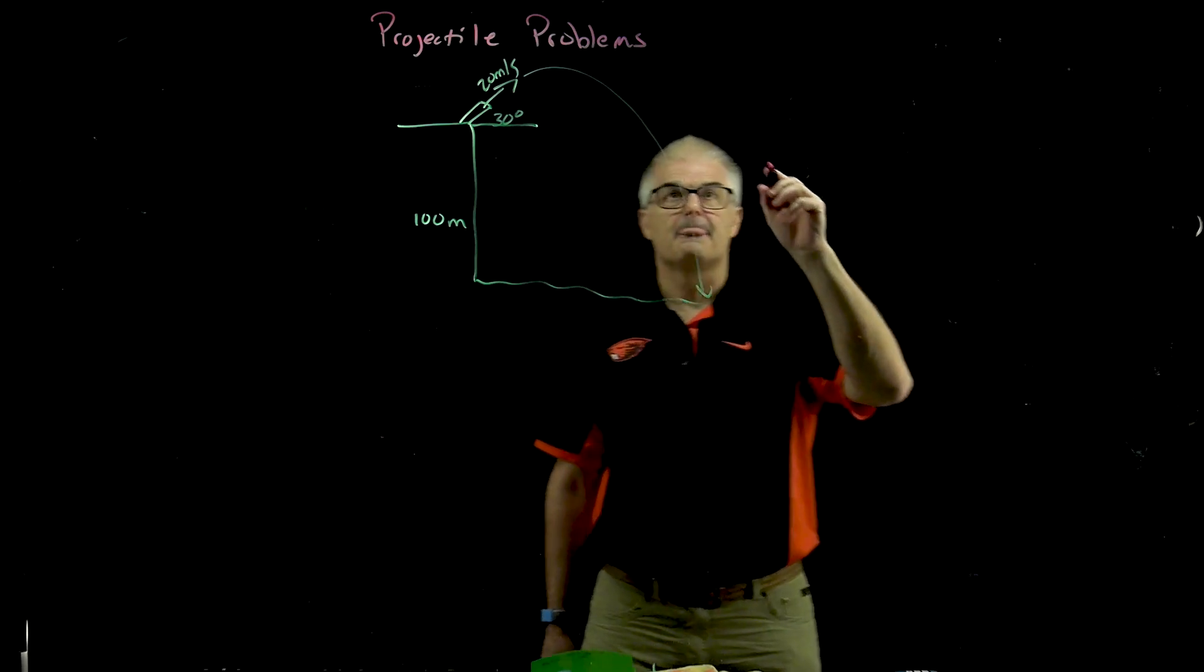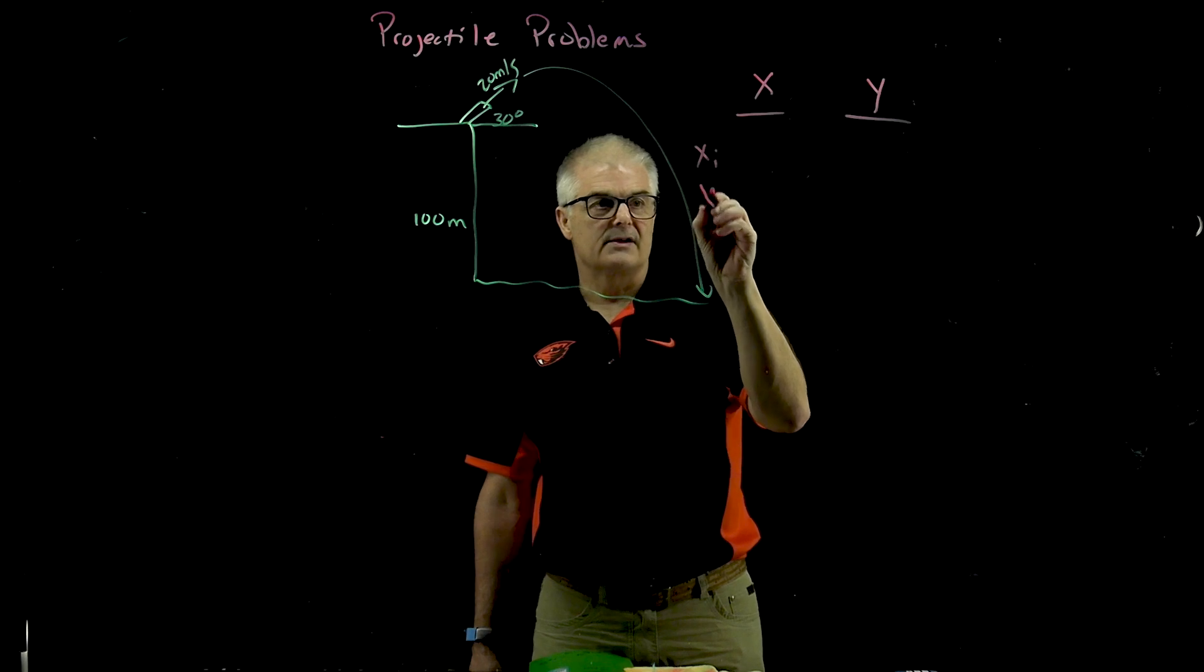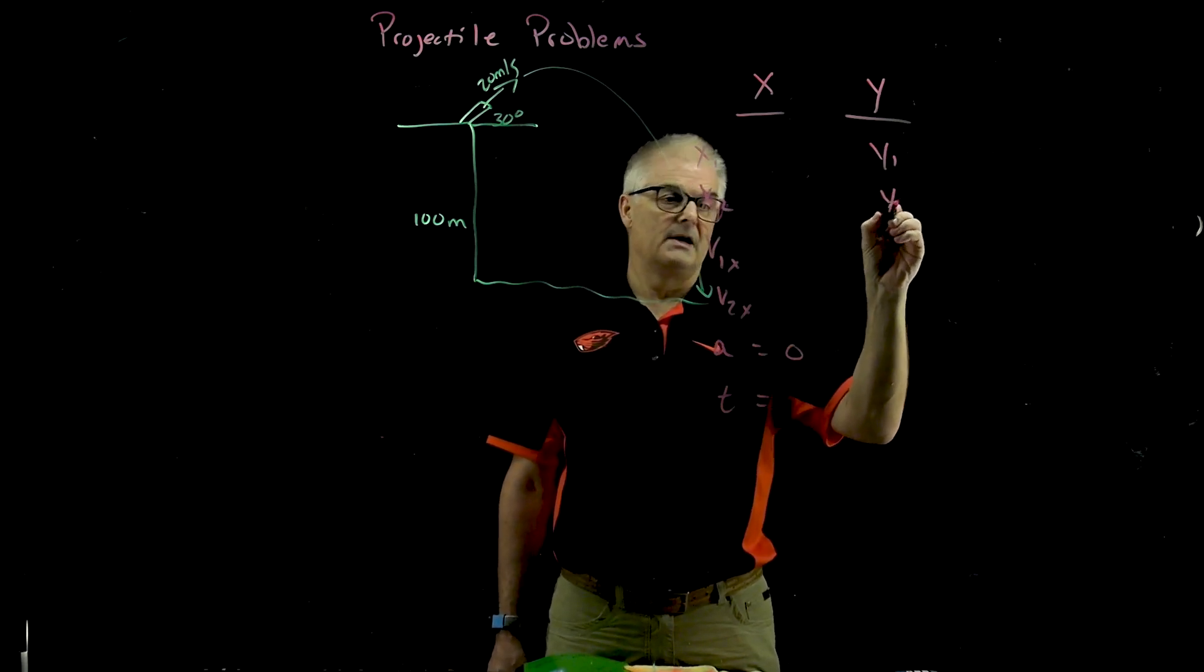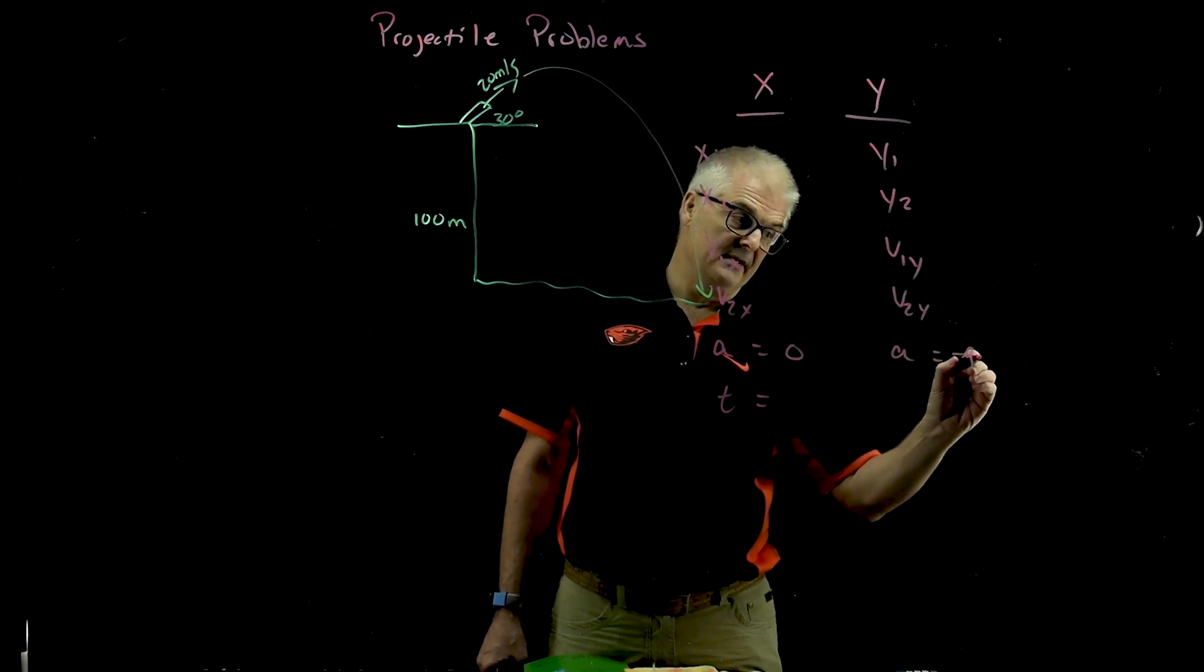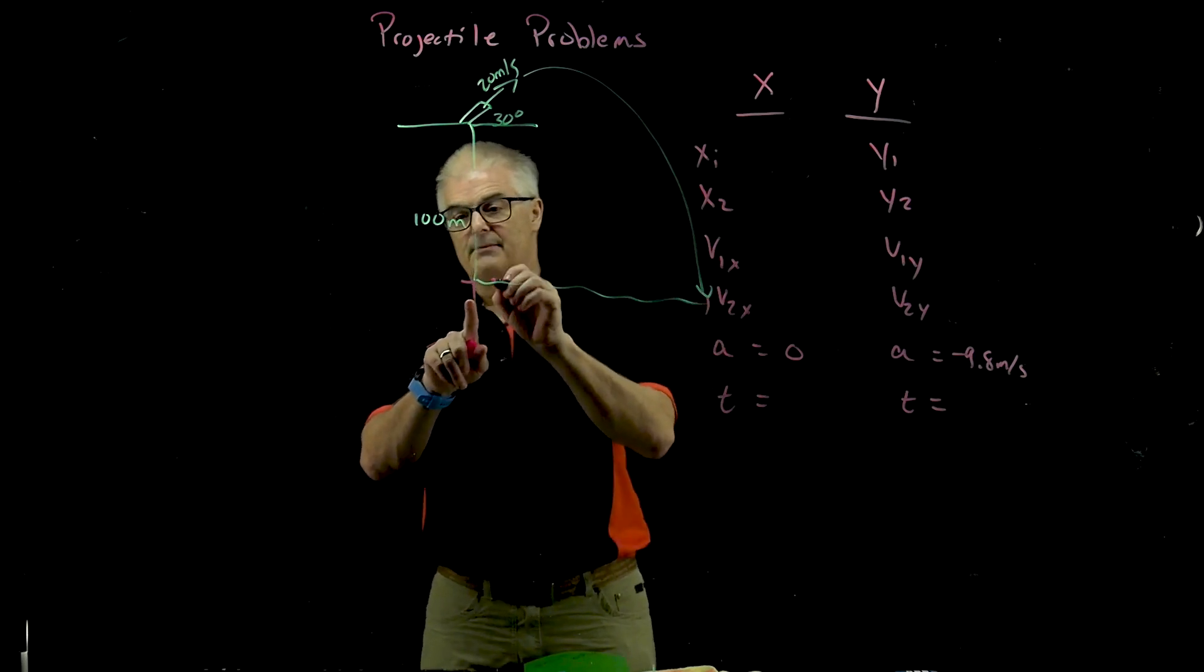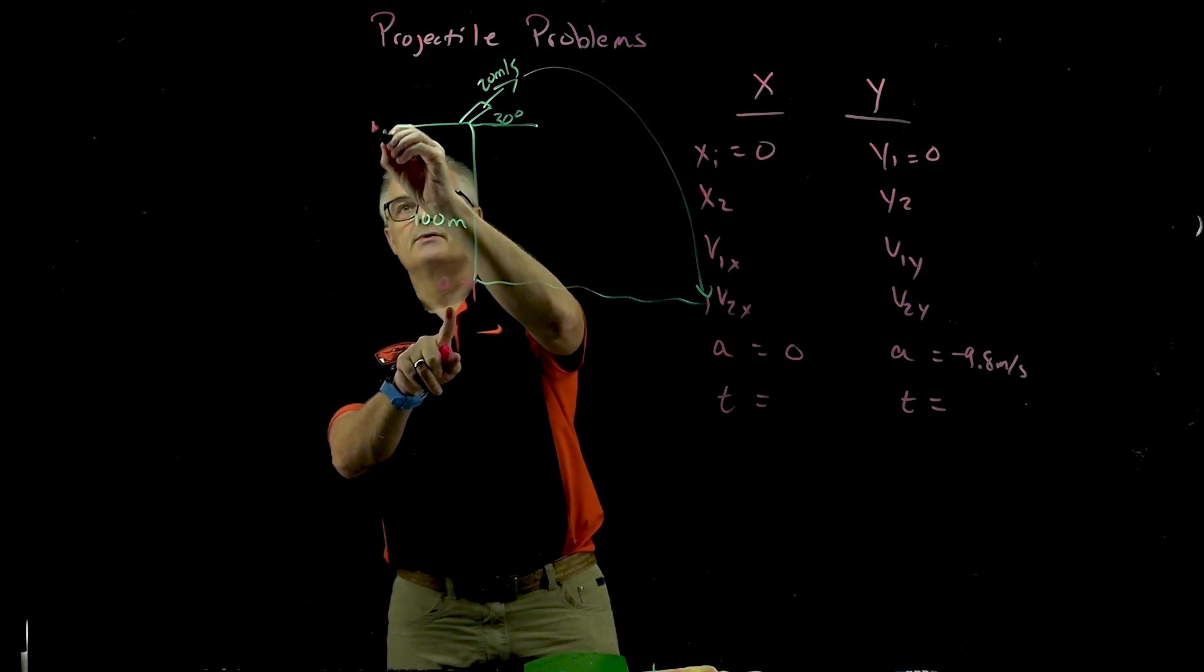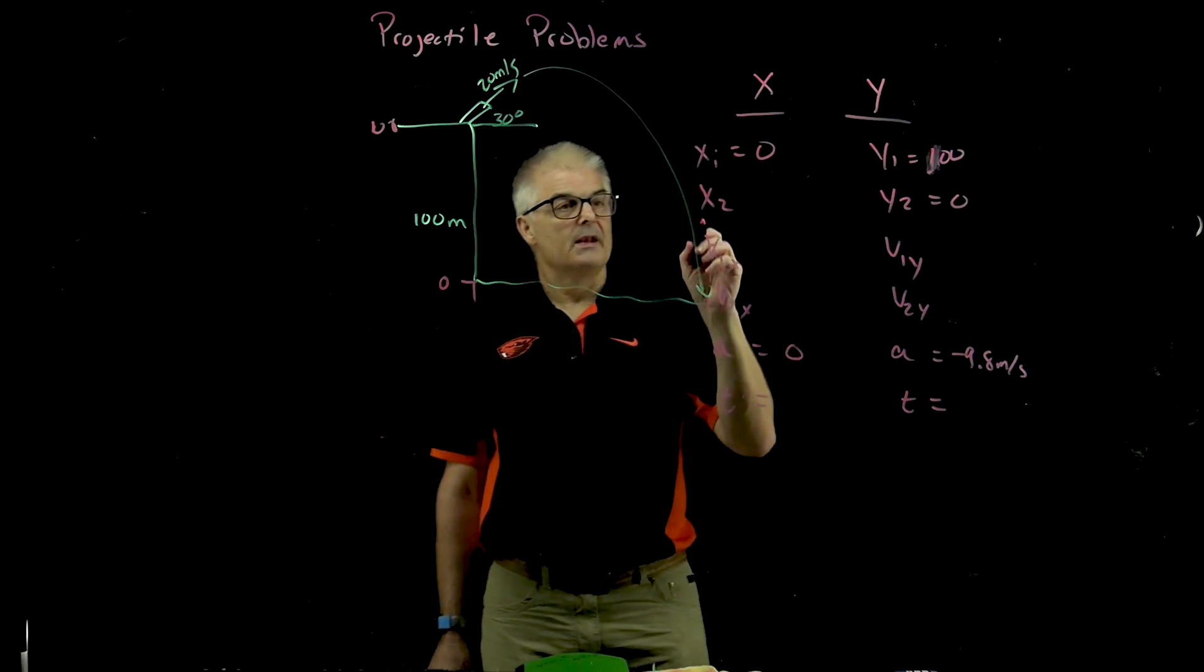Again we're going to start with our table. We have our x table and y table: x initial, x2, v1 in the x, v2 in the x, acceleration—that's zero—and time. For the y we have y1, y2, v1y, v2y, acceleration—that's negative 9.8 meters per second squared—and t. Now we can fill in some of these. X initial is zero. Y1 is a hundred and y2 is zero.